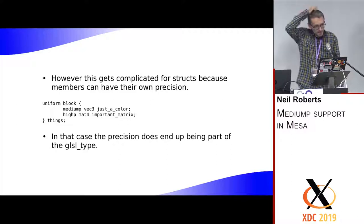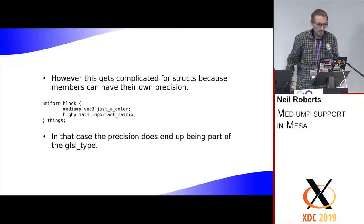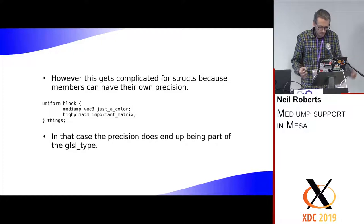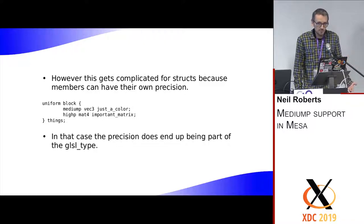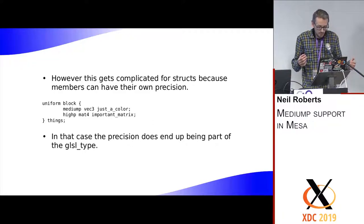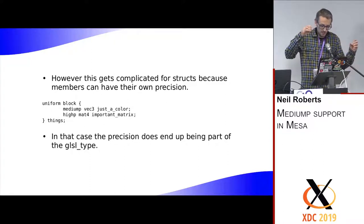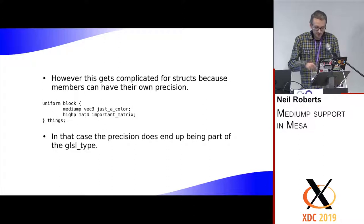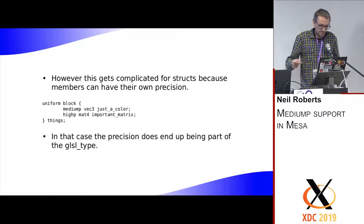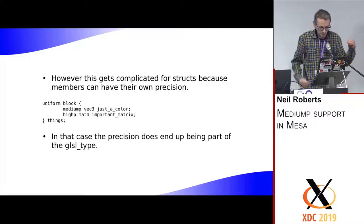There are quite a lot of rules in the spec about what happens when you link together shader interfaces. If you link between a vertex shader and a fragment shader with mediump in one and highp in the other, it should work. MESA has to go through some hoops when linking shader interfaces with structs, because you normally don't want to take precision into account when comparing types. But if the type is a struct, the type can have precision in it as well, so you need to specifically ignore the precision decorations when comparing types.